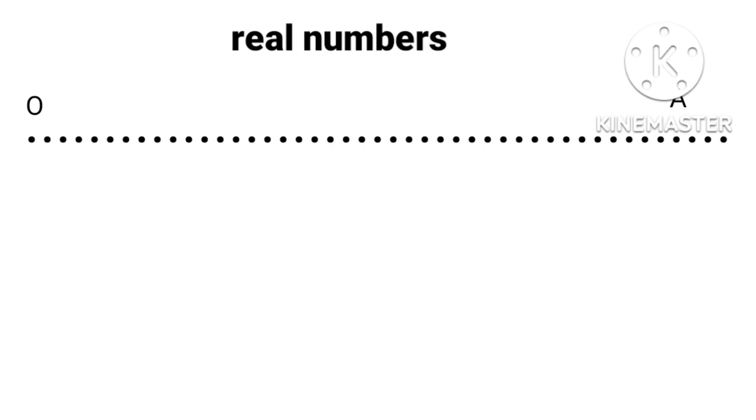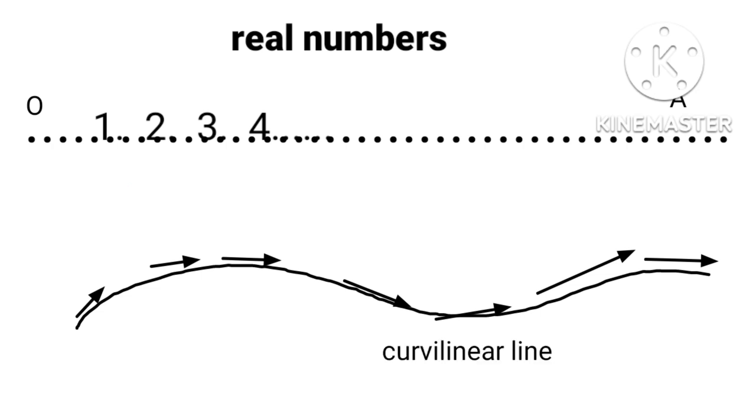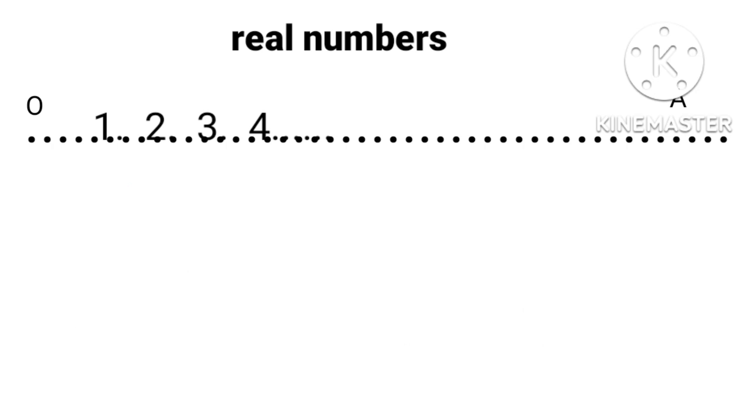When we put arrows at every point and arrows point in the same direction, it is a straight line. When arrows do not point in the same direction, the line is a curvilinear line. When each point on this line is assigned to numbers like 1, 2, 3, 4, they are called natural numbers.